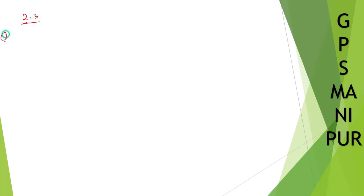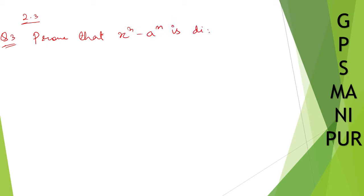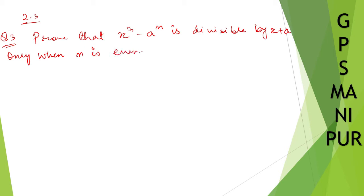Now we are doing Exercise 2.3, Question number 3. Prove that x to the power n minus a to the power n is divisible by x plus a only when n is even.